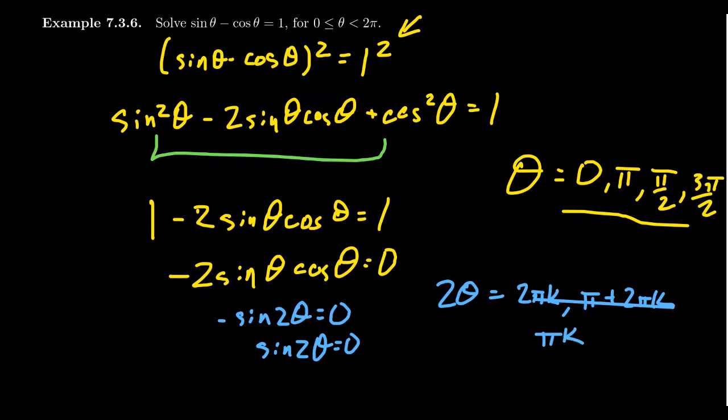And then theta, if you divide by 2 here, 2 theta divided by 2 is theta. πk divided by 2 gives you π/2 k. And notice then you reproduce all of these answers here again. If you take k to be 0, you get 0. If k equals 1, you get π/2. If k equals 2, you get π. If k equals 3, you get 3π/2.